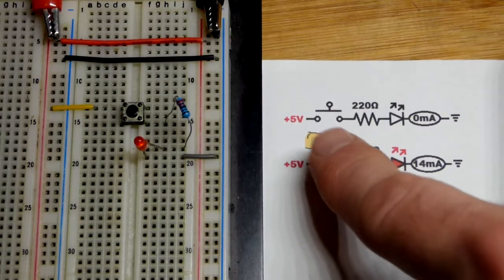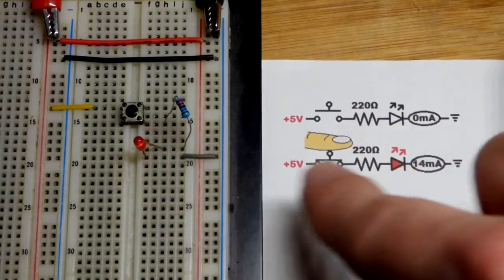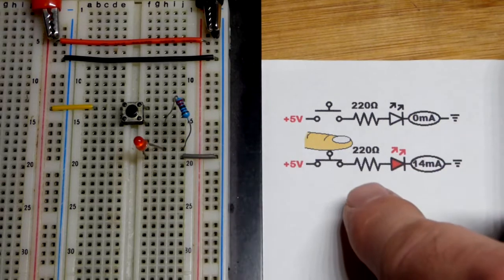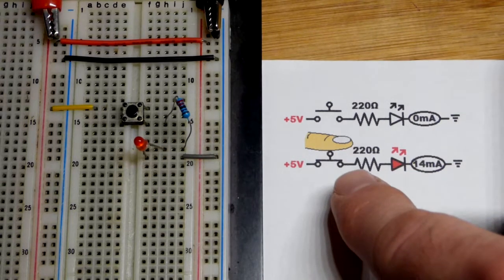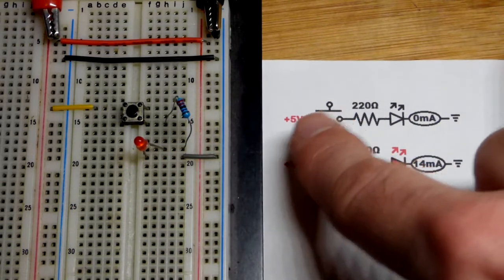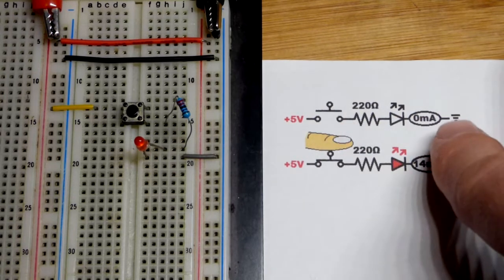So now in this video we're going to take a quick look at a switch and a circuit. We're using a push button switch because it fits in the breadboard pretty well. So right now the LED is off. That's because the switch is open. Current can't flow through the circuit.